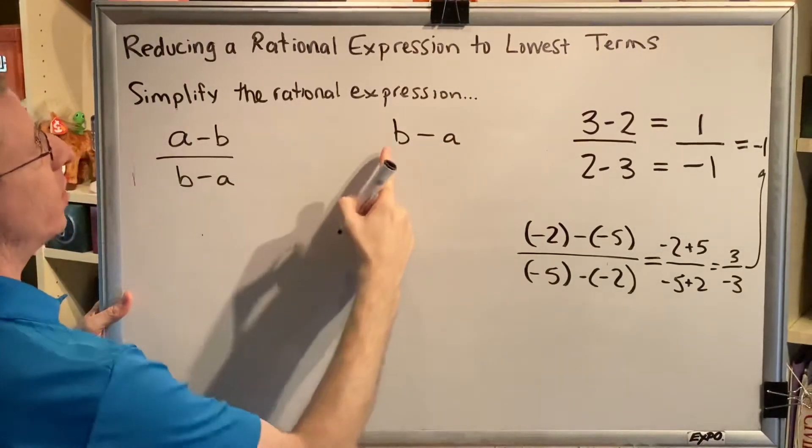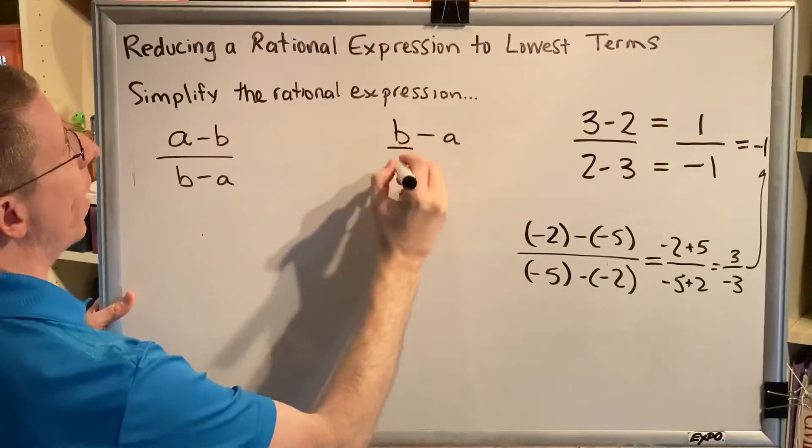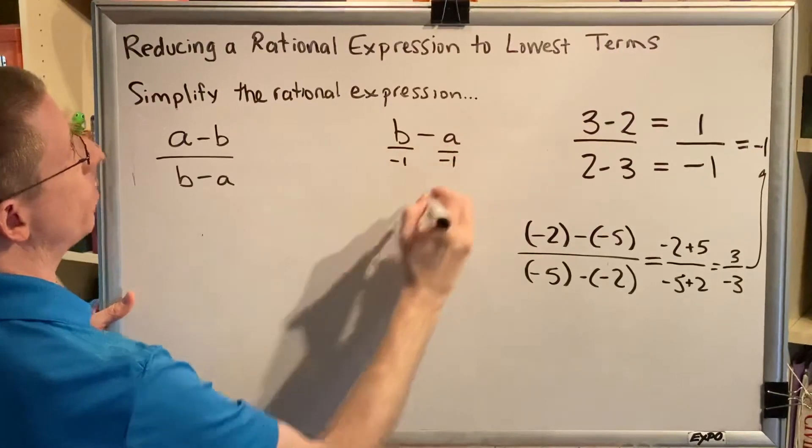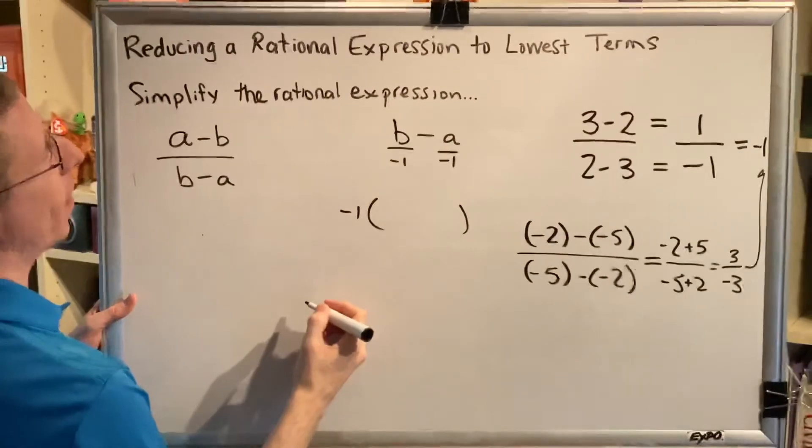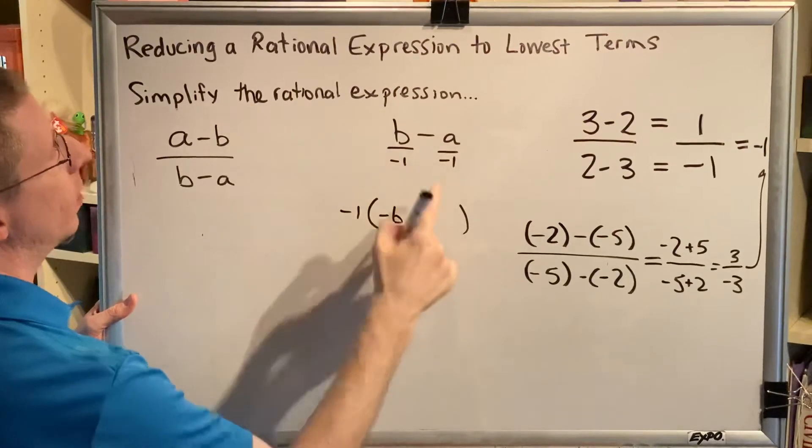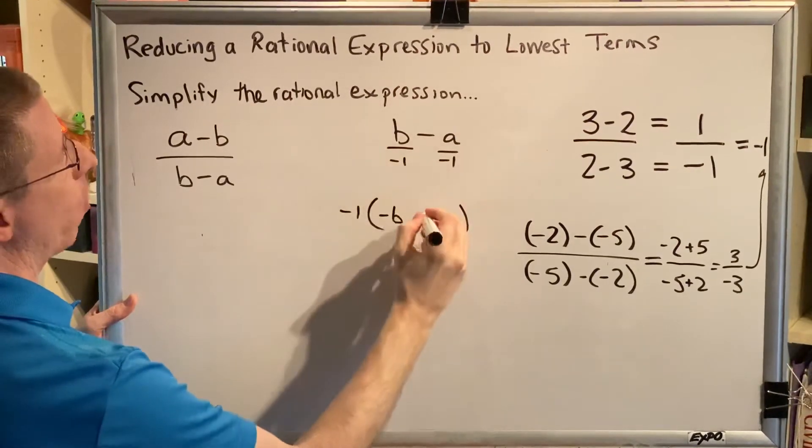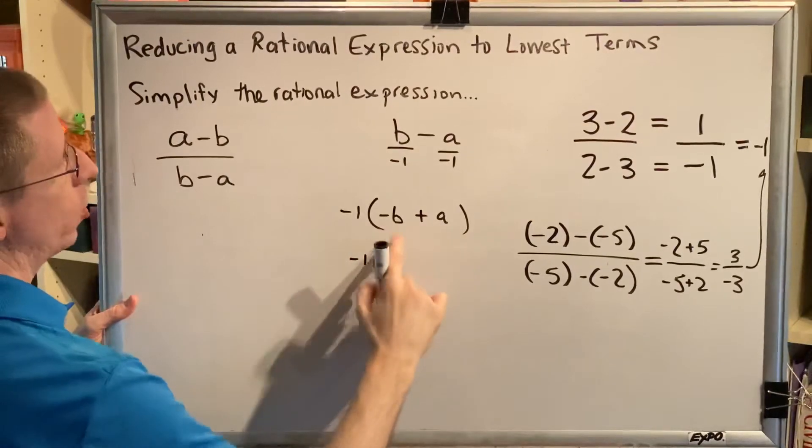So to factor something out, you just have to imagine that you are dividing it. So if you were to divide this by negative 1 and divide this by negative 1, then you put a negative 1 in front of the results so that they remain equal. b divided by negative 1 is negative b, and a negative a divided by negative 1 is a positive a.